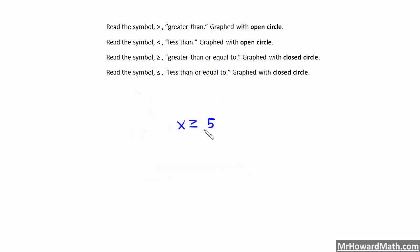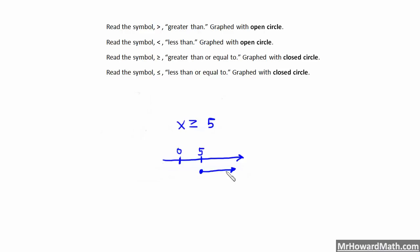Now let's graph x is greater than or equal to 5 on a number line. We sketch the number line, place 0 and 5. The symbol is greater than or equal to, so we use a closed (filled-in) circle at 5 and draw the arrow to the right. This means all x greater than or equal to 5 — so 5 itself is included, as well as 5.01, 6, 7, and everything to the right.